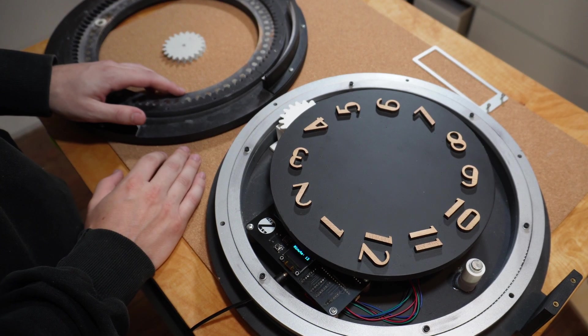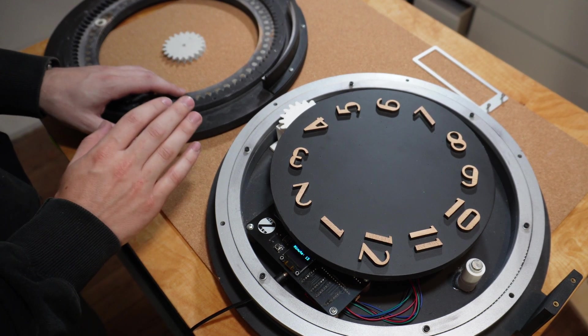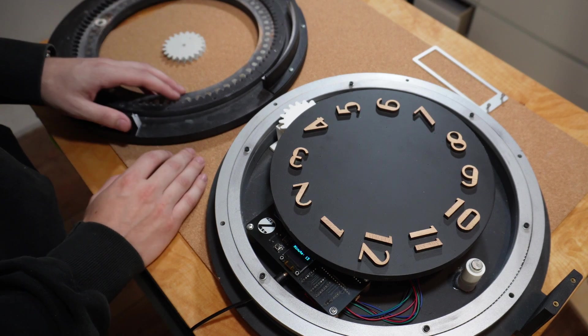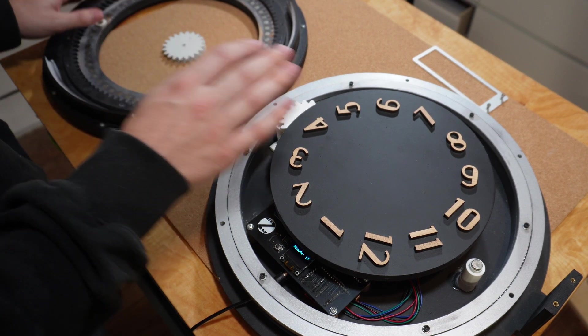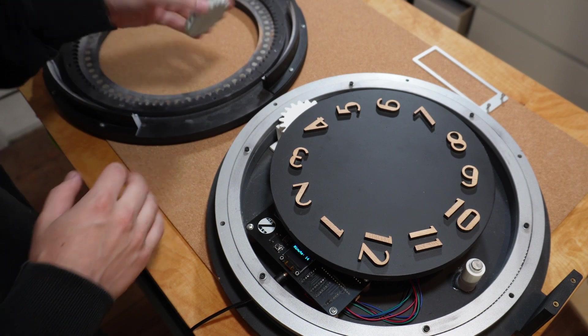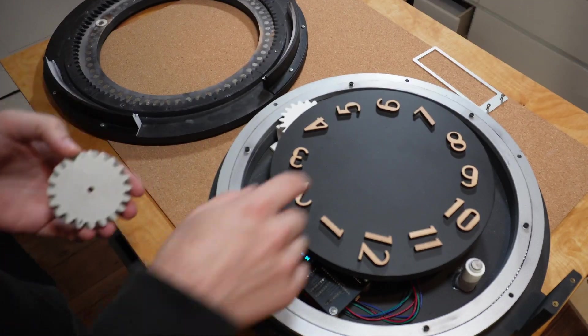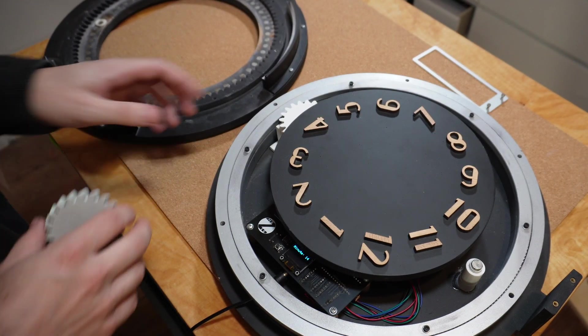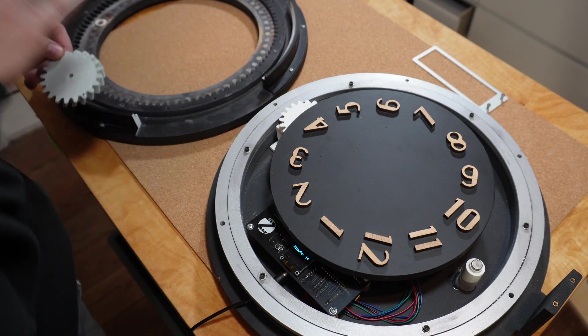Since the last update I have done quite a bit of testing and made some changes and now the clock works really well. There were some issues with the stepper motor struggling to turn the dials due to too much friction. For example this gear was rubbing on the inner circle so I printed a thinner one and now the clock works perfectly.